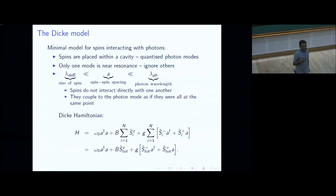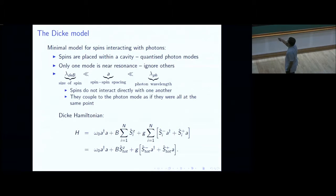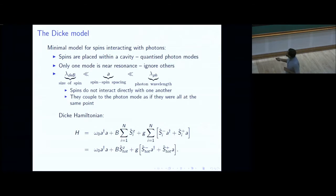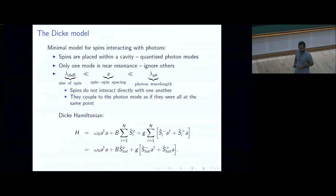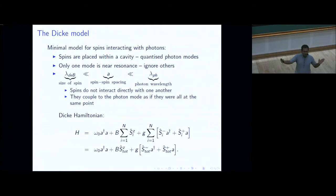The Dicke Hamiltonian has a very nice property. You can rewrite it in terms of the total spin operator — the sum over all spins of the spin-Z operator — and the total lowering and raising operators S_total minus and S_total plus. This system therefore has permutation symmetry: you can permute all the spins and it doesn't matter, because the spin operators always enter as a sum over all spins.